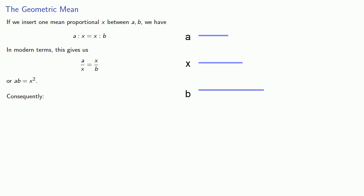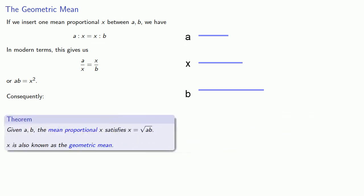Consequently, we have the following result. Given a and b, the mean proportional x satisfies x is the square root of a times b. And x is also known as the geometric mean.